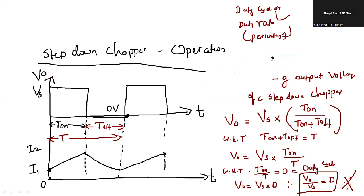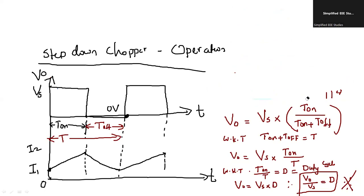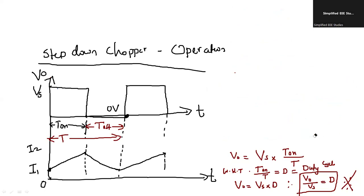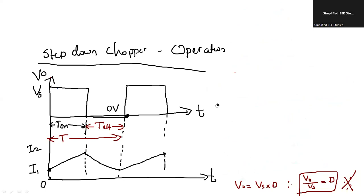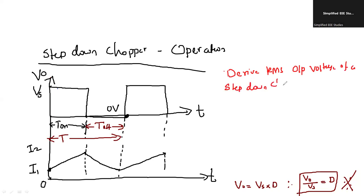Now I would like to derive one more expression: an expression for the RMS output voltage of a buck converter. We need to derive the expression for RMS output voltage — this can also be asked in GATE examination. Derive the RMS (root mean square) output voltage of step-down chopper.